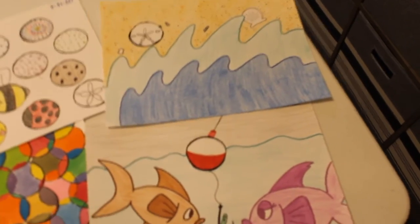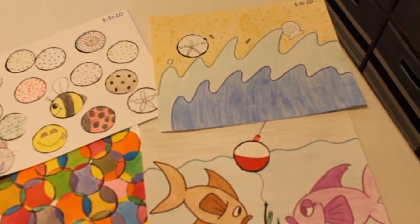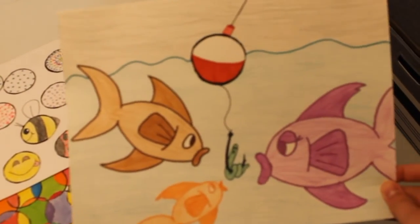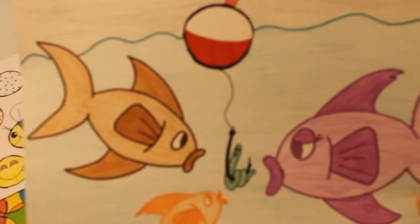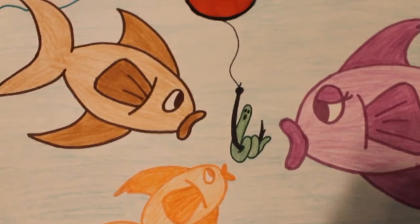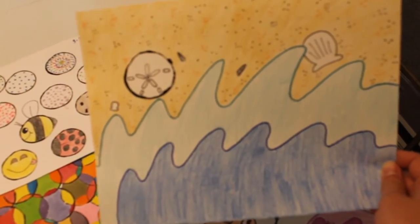So I just had one circle on each page. And I had to challenge myself and make it into an actual picture. So here is the bobber and the water and the fish are going after the worm. And here is the sand dollar on the seashore.